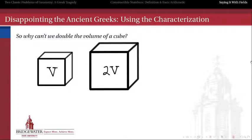So let's return to this question that was our ancient Greek tragedy. Why can we not double the volume of a cube? We could do it for a square, the area of a square, but we can't do it for the volume of a cube with a compass and a straight edge. Why not?